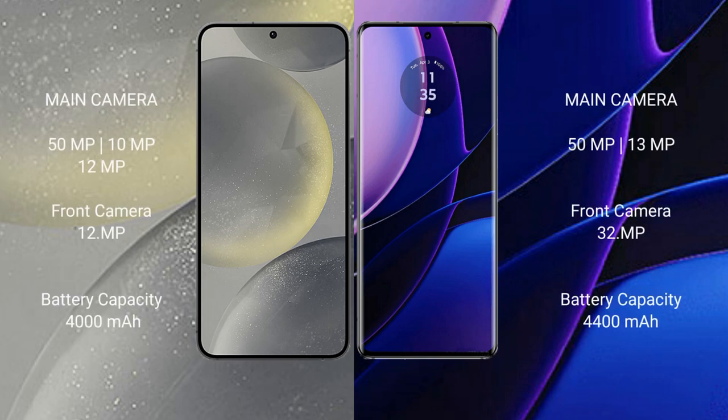Samsung Galaxy S24 has a rear triple camera setup: 50MP, 10MP, 12MP, and a front camera of 12MP. Motorola Edge has a rear dual camera setup: 50MP, 13MP, and a front camera of 32MP.